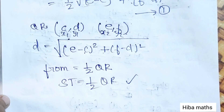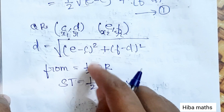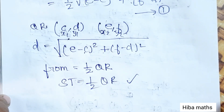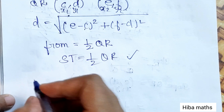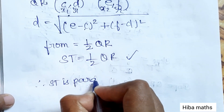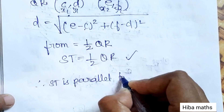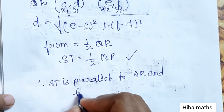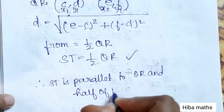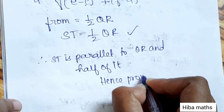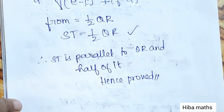So we have proved both conditions: ST is parallel to QR and ST is equal to half of QR. Hence proved. Thank you so much for watching.